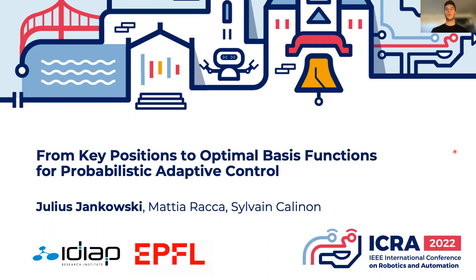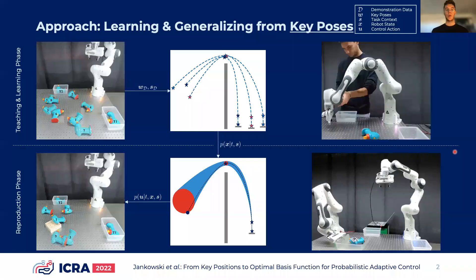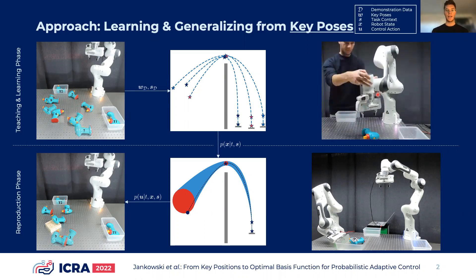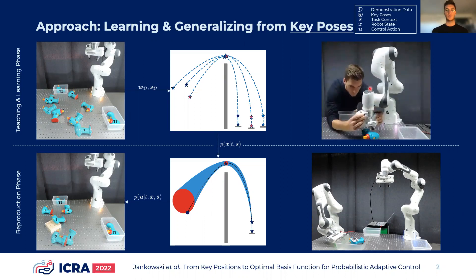Welcome to the presentation of our recent work at ICRA 2020 with the title 'From Key Positions to Optimal Basis Functions for Probabilistic Adaptive Control.' Our work contributes to the field of learning from demonstration, which aims at learning new robot behavior from as few demonstrations as possible. In the illustrated application, the robot is supposed to place an object with a complicated shape into a box. We investigate the idea of asking a user to provide only key poses as snapshots along the desired robot trajectory.